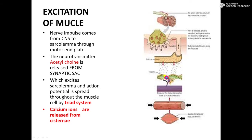The F-actin consists of helically bound globular molecules forming the F-filament. Adjacent to the F-filament, tropomyosin is present, and at regular intervals on the tropomyosin, troponin is present. Troponin contains three molecules: troponin C, troponin I, and troponin T. Calcium molecules attach to troponin C of the troponin.